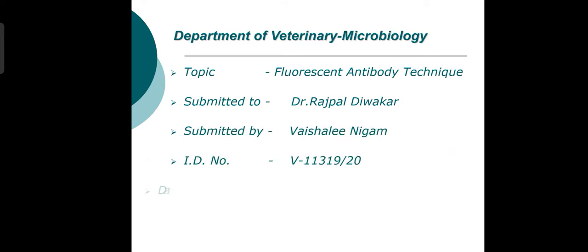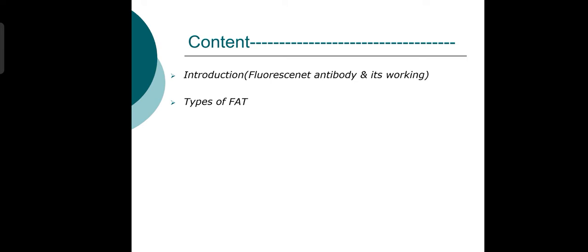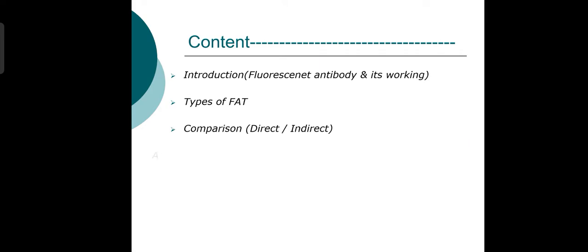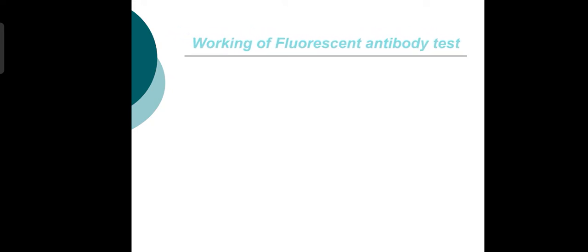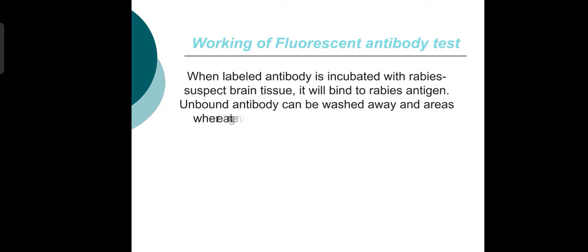The content includes: first, introduction of fluorescent antibody and its working; second, types of fluorescent antibody techniques; third, direct and indirect methods; fourth, antigen and antibody interaction; and fifth, principles and applications of fluorescent antibody techniques.